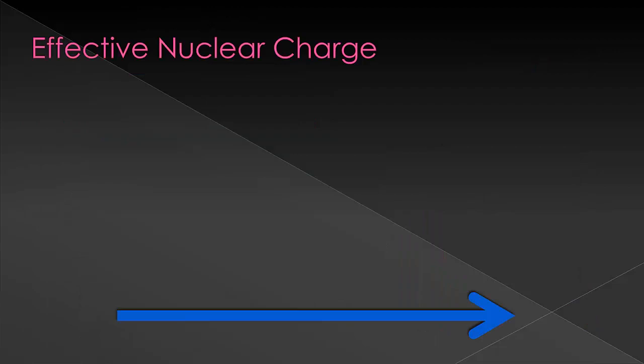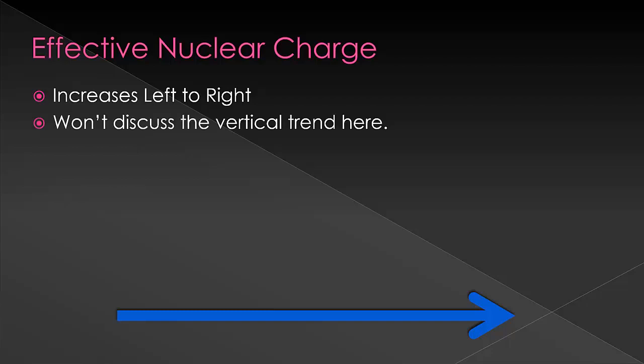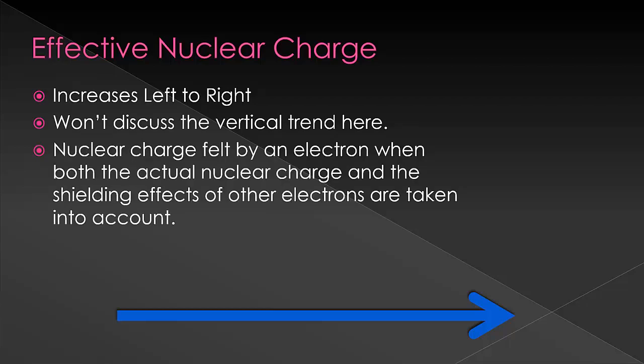First, we'll start with effective nuclear charge, since this is the basic reason for most of the other trends when it comes to the horizontal principles at least. It increases as you go across the periodic table to the right. This is the strength of the pull that the electron feels from the nucleus. As we increase the number of protons without increasing the amount of shells, the electron feels more of a pull.